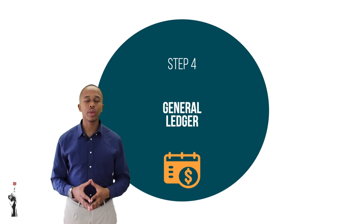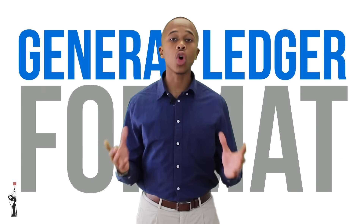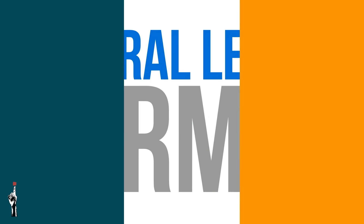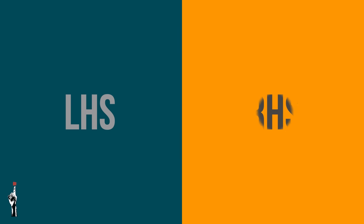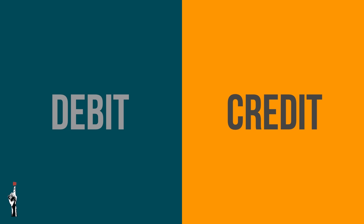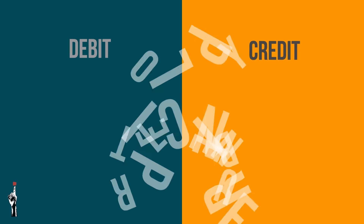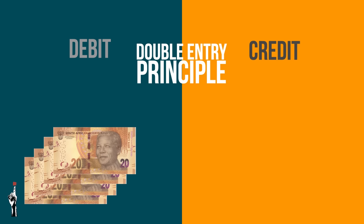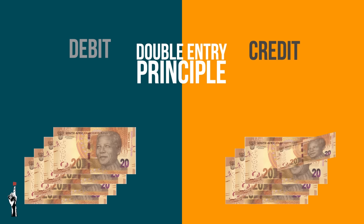Before we can record the general ledger, we first have to understand its format and the accounting concepts related to it. Each ledger account has two sides: the left-hand side and the right-hand side. The left-hand side is the debit side and the right is the credit side. Entries in the general ledger are based on the double entry principle, which states that for every debit entry there must be an equal and corresponding credit entry.